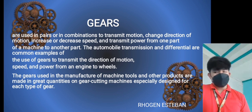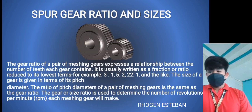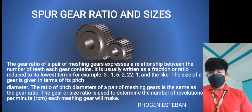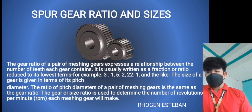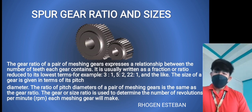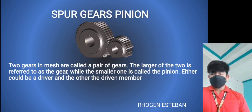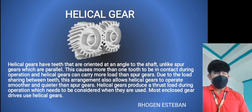Types of gears: First, spur gears. The gear ratio of a pair of meshing gears is expressed by the number of teeth each gear contains, usually as a fraction reduced to its lowest terms. For example, the pitch diameters of a pair of meshing gears have the same ratio as the gear ratio. The gear ratio is used to determine revolutions per minute (RPM). Two gears in mesh are called a pair — the larger is referred to as the gear while the smaller one is the pinion; either can be the driver or driven.